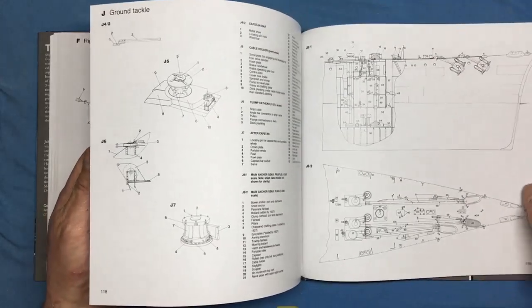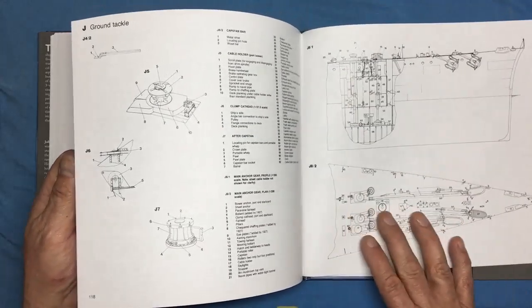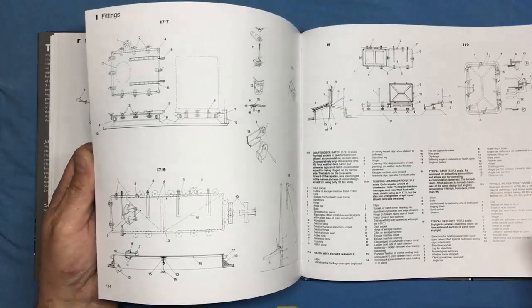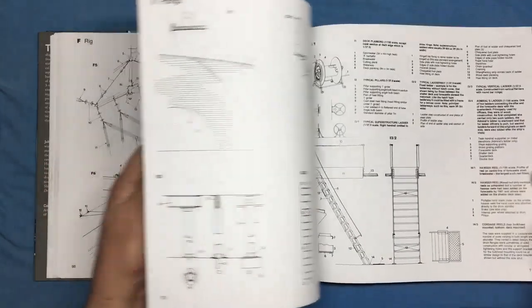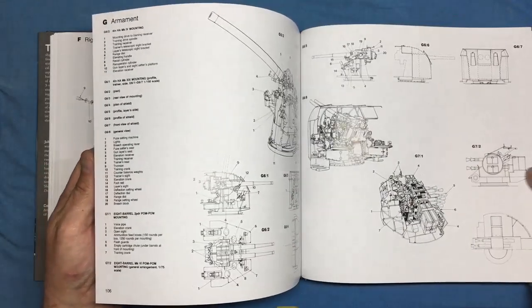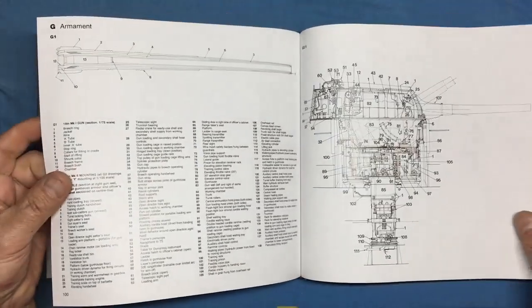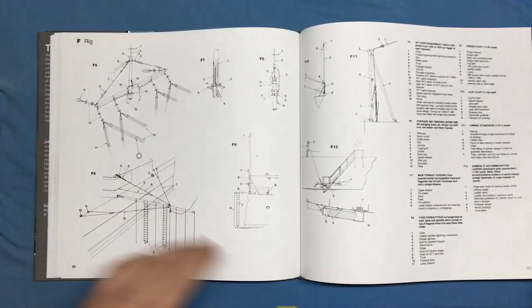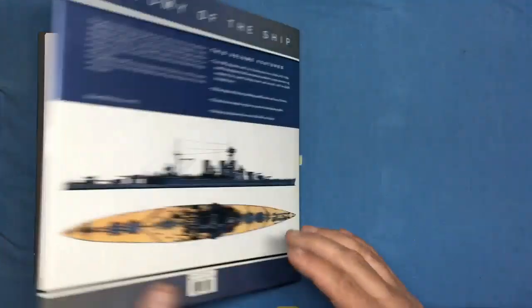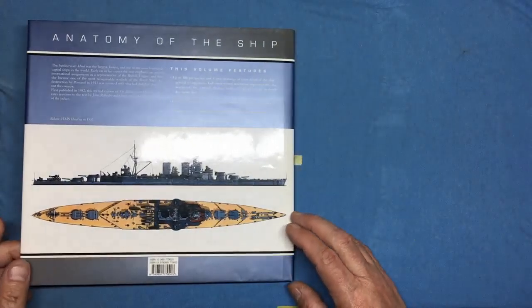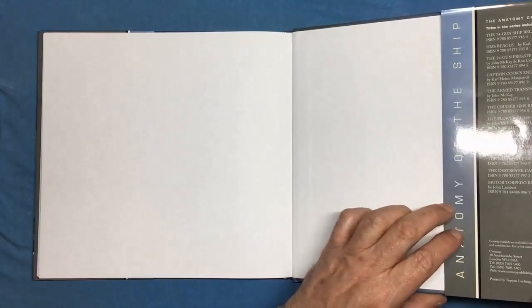Then we've got all the lifeboats and dinghies with the detail there, the focsle with the anchor chains and everything, stairs, guns, main turrets. Absolutely incredible. Fantastic book, very much worth buying.